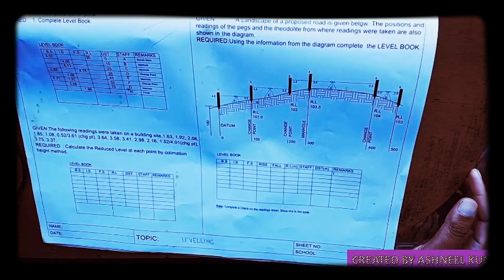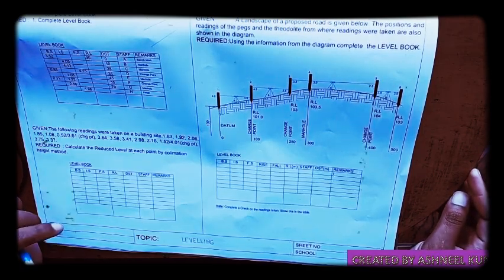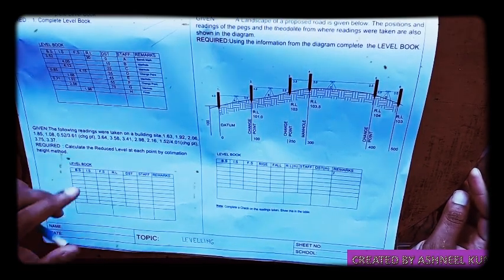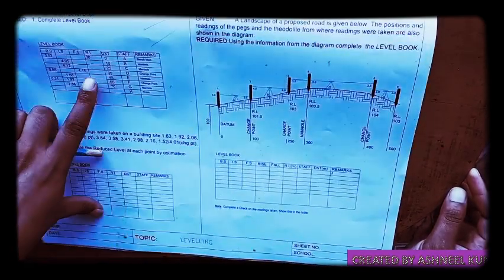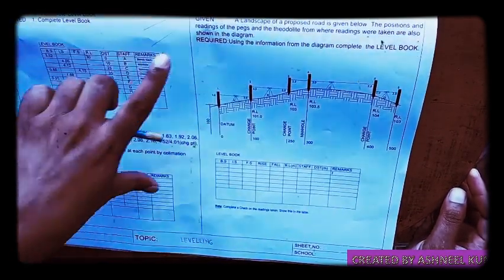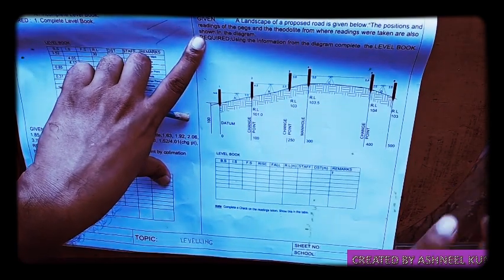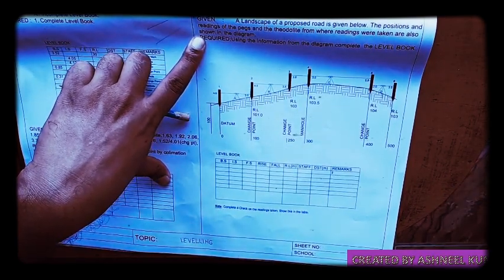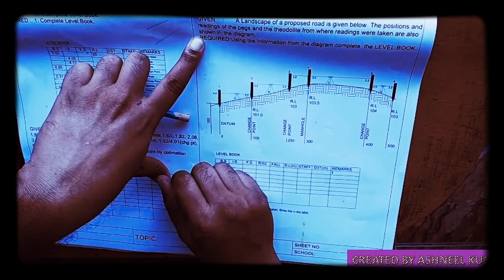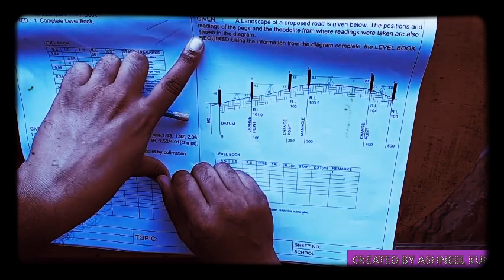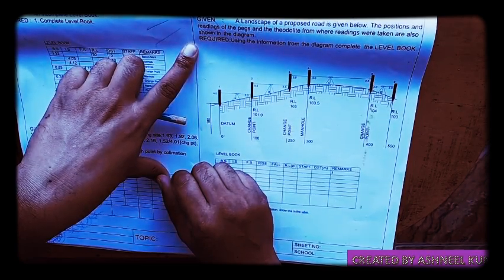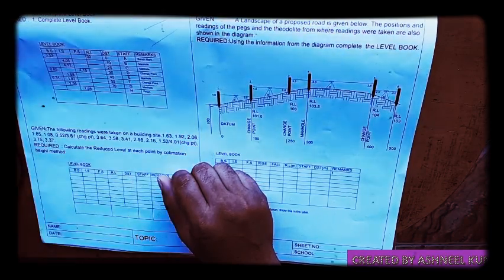This topic is based on leveling. The landscape of our proposed road is given below. The position and readings of the pegs and the theodolite from where readings were taken are also shown in the diagram. You are required, using the information from the diagram, to complete the level book.